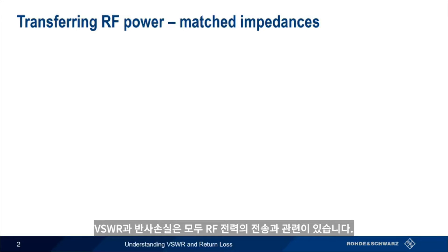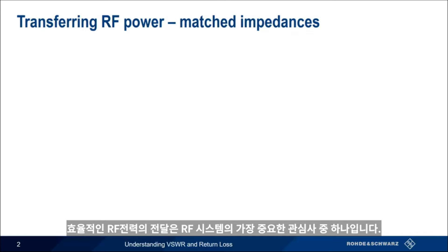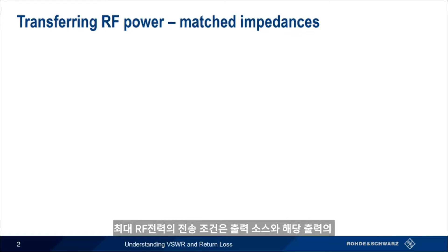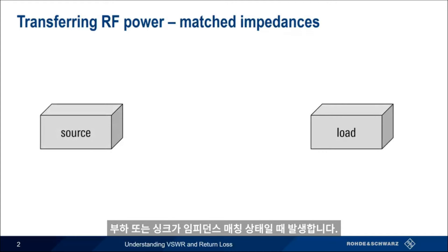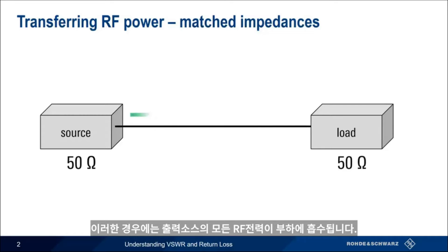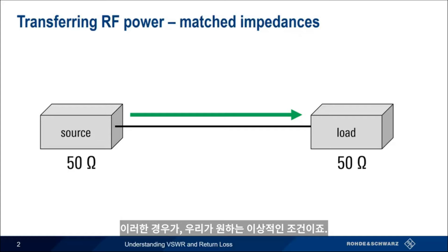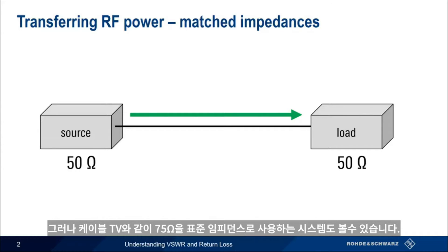VSWR and return loss are both related to the transfer of radiofrequency power, and efficient power transfer is one of the most fundamental concerns in radiofrequency systems. Maximum RF power transfer occurs when the source of RF power and the load, or sink, of that power have impedances that are matched. In this case, all of the RF power from the source is absorbed by the load, and in most cases this is exactly what we want. The standard impedance in the RF world is usually 50 ohms, but you'll also come across systems that use 75 ohms, for example, cable television systems.